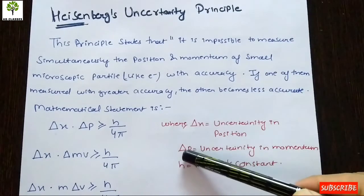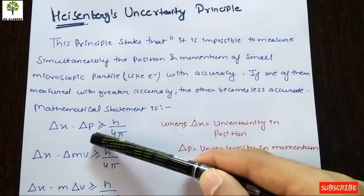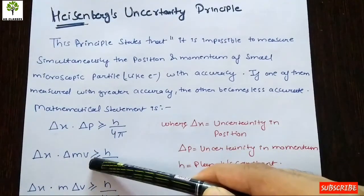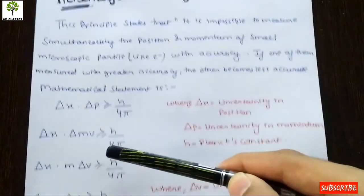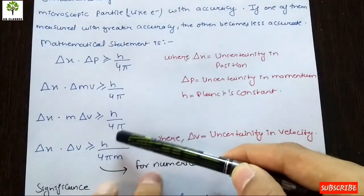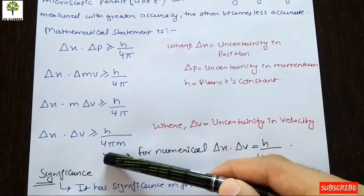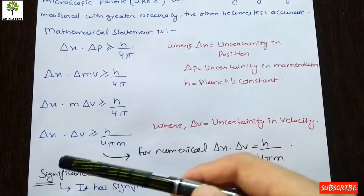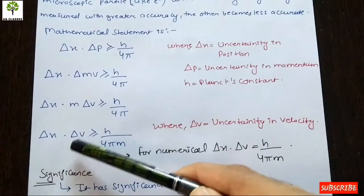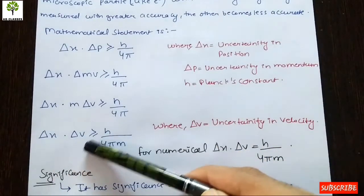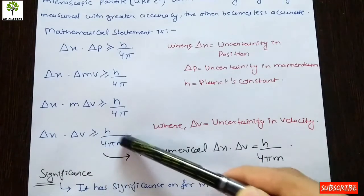If we talk about the formula of momentum, which is m into v, then if we substitute that in, the formula becomes: delta x multiplied by delta v is greater than or equal to h upon 4 pi m.